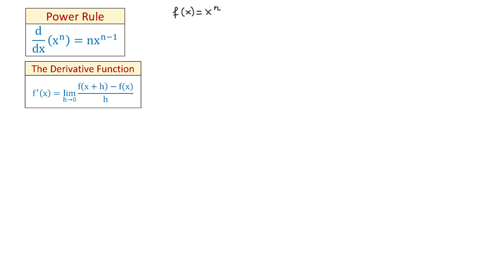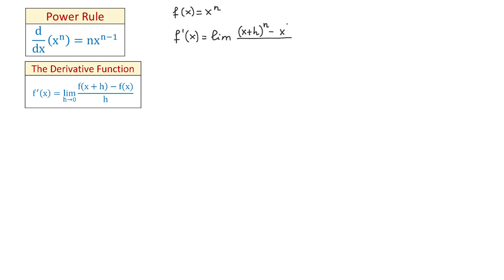Then according to the definition of the derivative, f prime of x equals the limit. In the numerator, first we need f of x plus h, which means we replace x with x plus h. So we will write x plus h to the n-th power minus x to the n-th power, over h as h approaches 0.